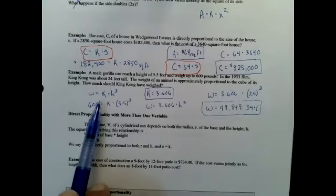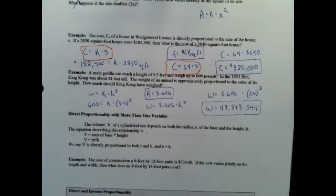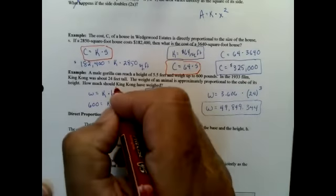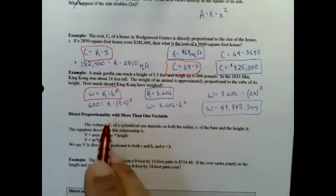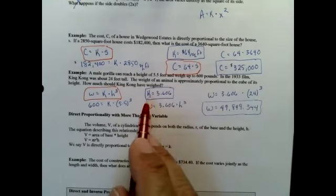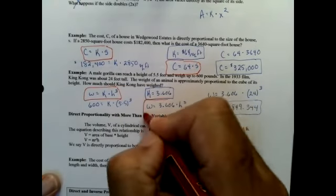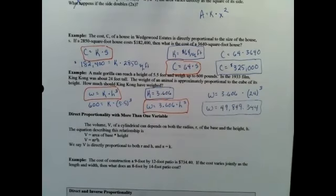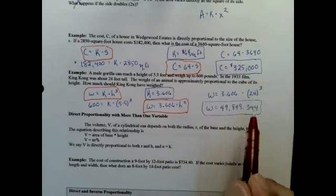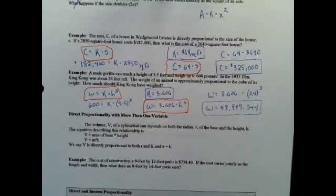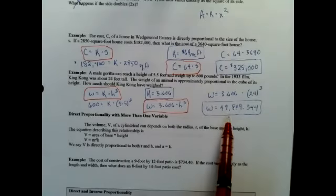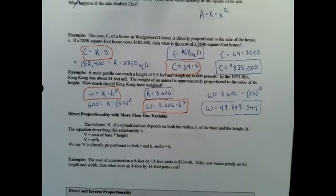King Kong. His weight varies directly as his height cubed. Again, I had an original equation. I calculated that constant of proportionality, and now I have an equation without the k but the 3.606 thing. So 24 foot tall King Kong should weigh about 50 tons. 2,000 pounds is a ton, I'm sorry, 25 tons.